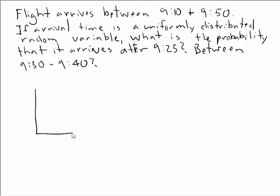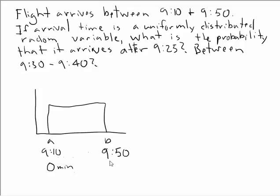The plane arrives between 9:10 and 9:50. So I'm going to draw my uniform, continuous uniform probability distribution. Again, we have points A and B, but now we have some numbers to put with these points. We said it arrives between 9:10 and 9:50. So those are the limits. So A is really equal to 9:10, B is really equal to 9:50. And we're going to do something else. Rather than dealing with these clock times, we're going to put it in terms of a range from 0 up to something. So if 9:10 was equal to 0 minutes, then this is 40 minutes later. Point B would be at 40 minutes.